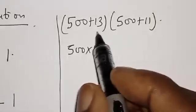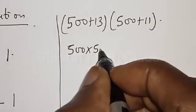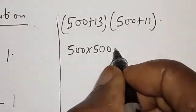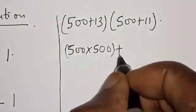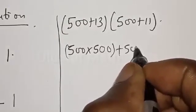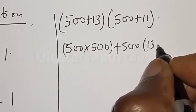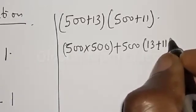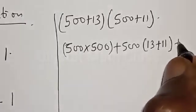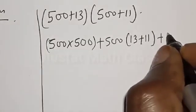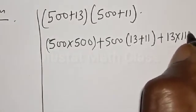Then from here, we have 500 multiplied by 500, plus 500 into (13 plus 11), plus 13 multiplied by 11.